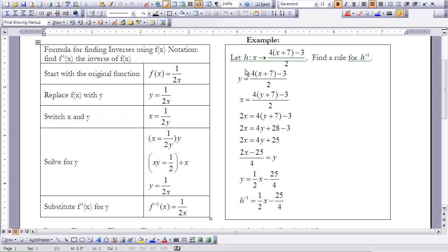We're going to try this again with the function h(x) = (4(x+7)-3)/2. And we want to find the inverse of h. So remember, we're going to take out the h mapping x onto this and just substitute y for that. Then we're going to flip our x and our y variables. And now we have to solve for y.